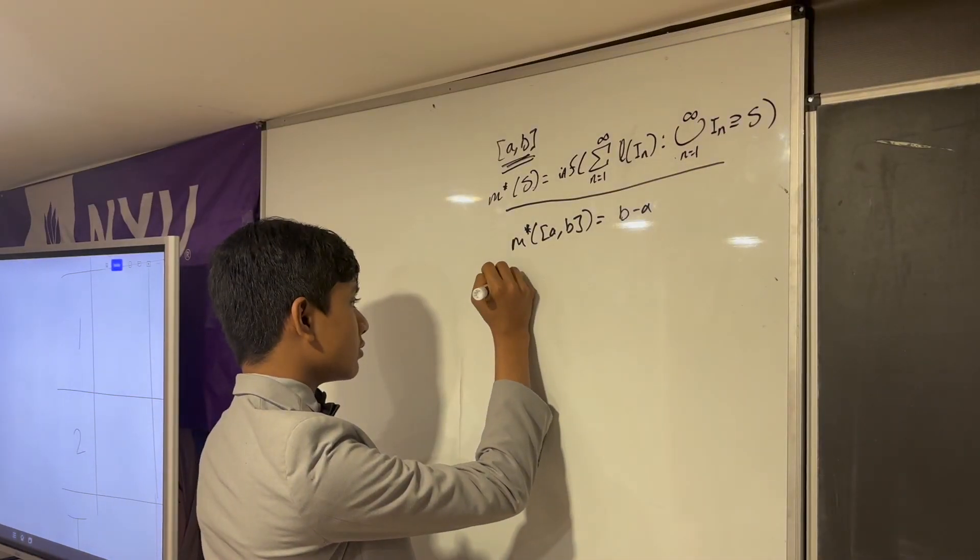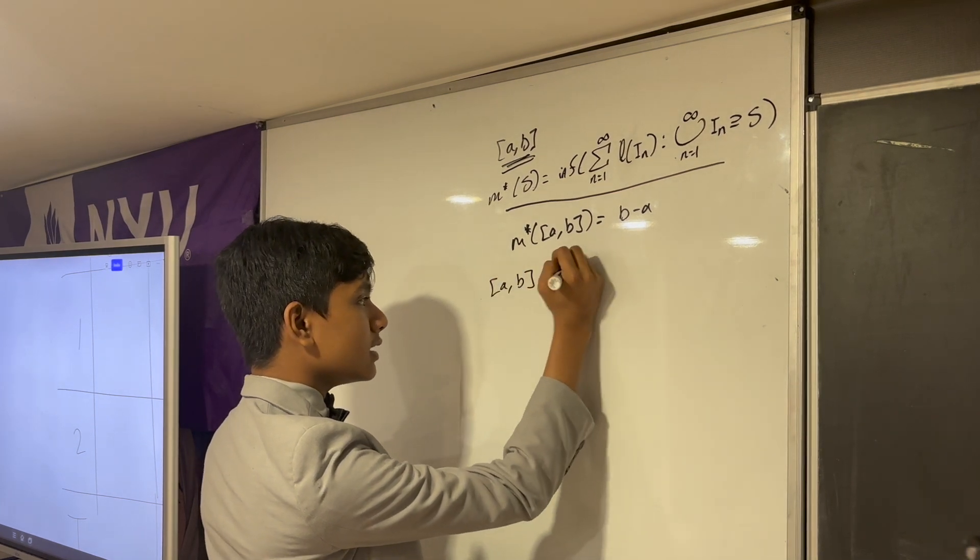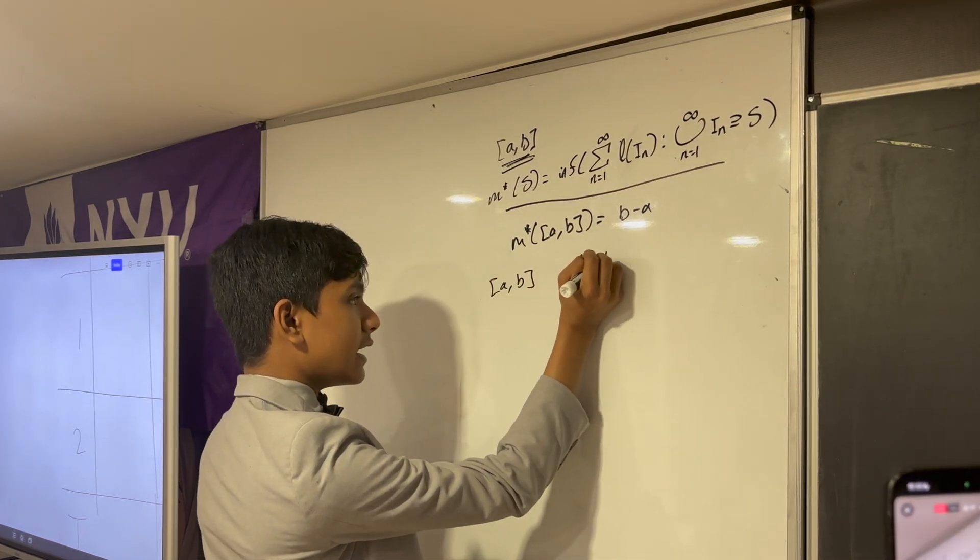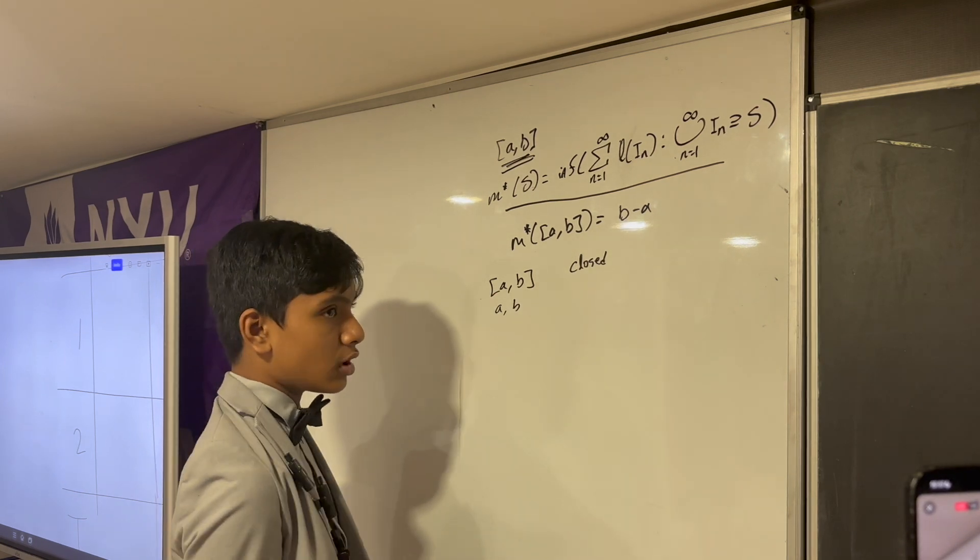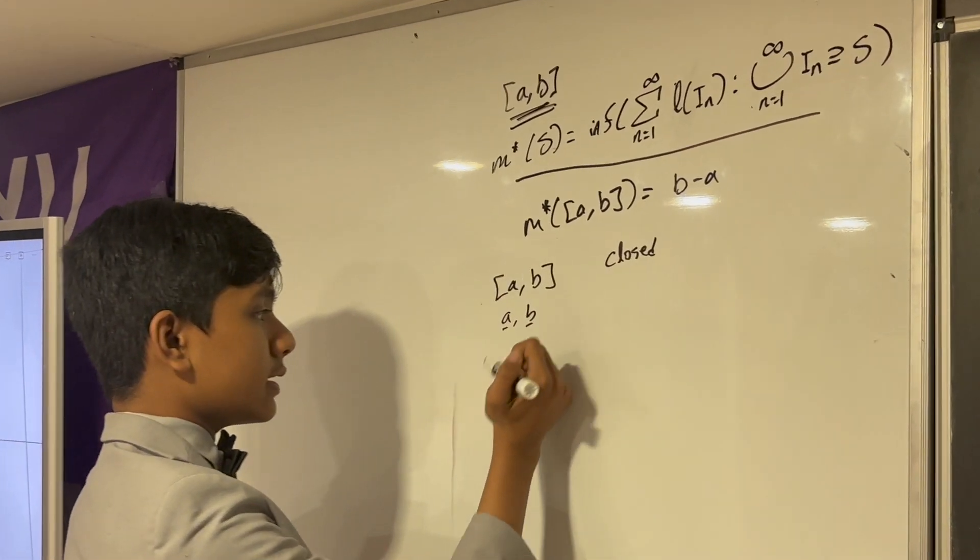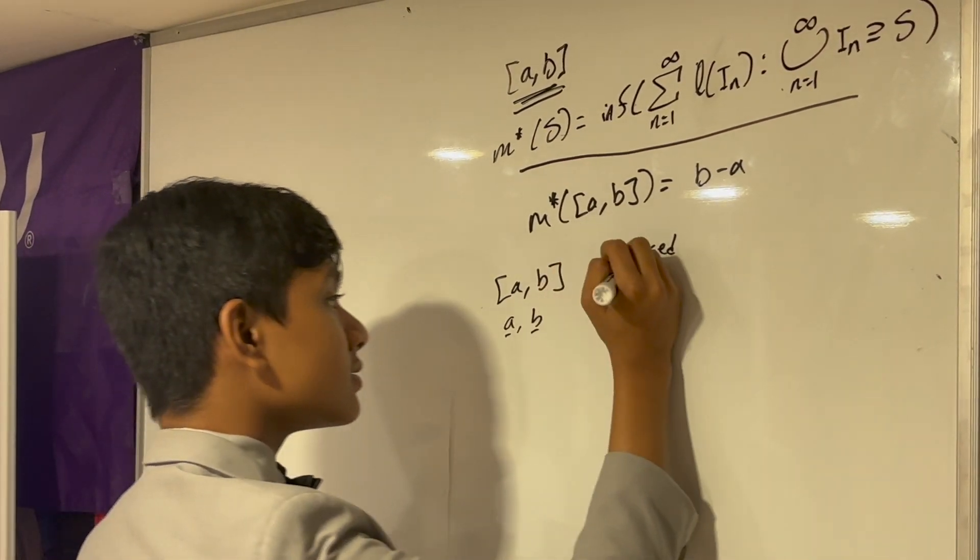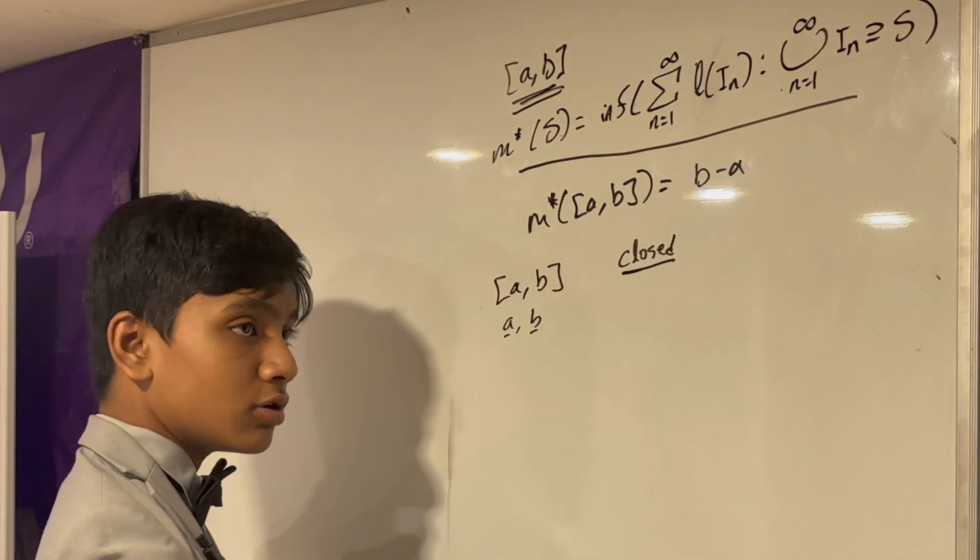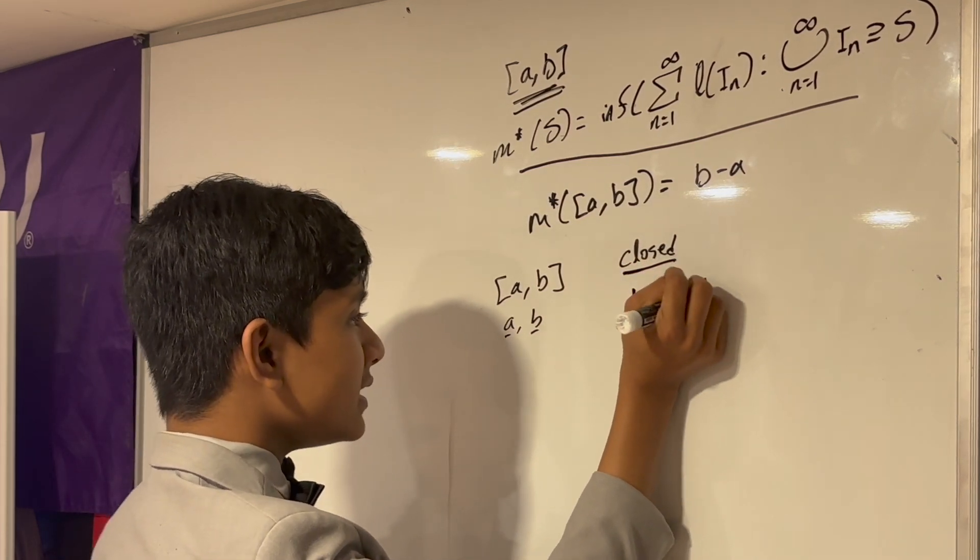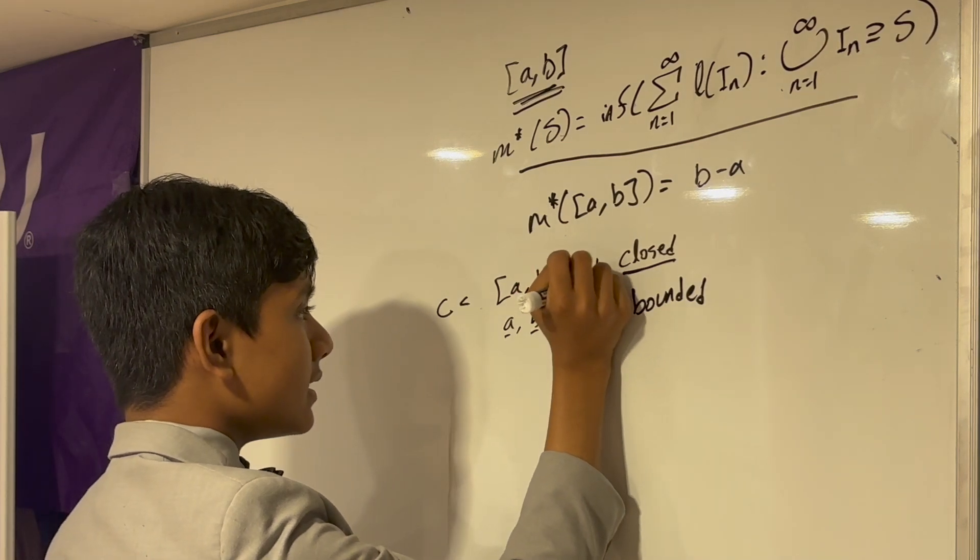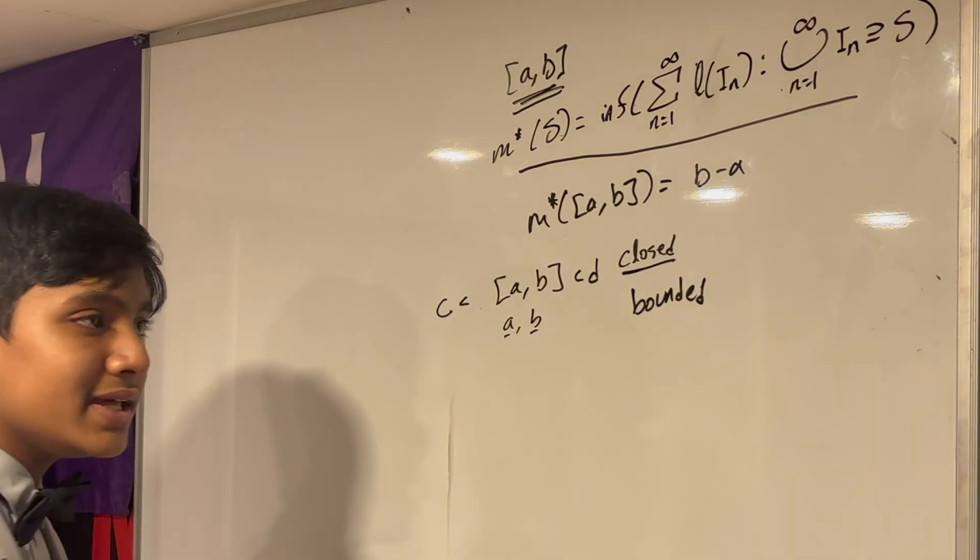The first step is noticing that not only is [A,B] closed, it contains its two limit points A and B. Well, it contains all of its limit points, but it contains its boundary points. So it's closed, and it's bounded, because we can very easily find C, which is less than A, and D, which is greater than B.